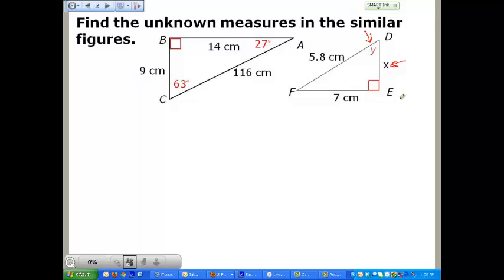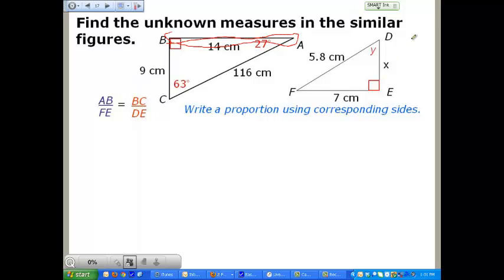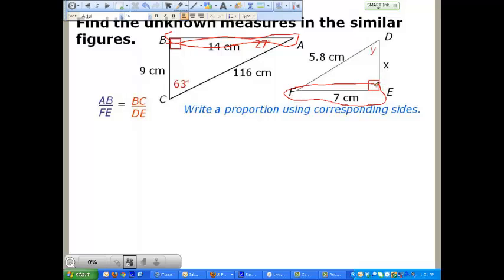Alright. Hopefully you paused the recording. Let's go ahead and take a look at it and see what you came up with and compare your work with mine and your answers with mine. First off, we had to write a proportion using corresponding sides. I chose to use sides AB right here, and side FE right here as my corresponding sides. We don't want to use decimals if we can avoid it as my corresponding sides. And we've got side BC right here, and side DE right there.